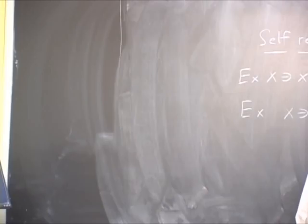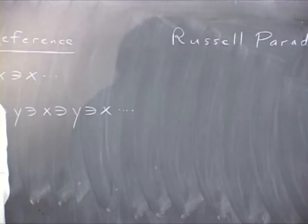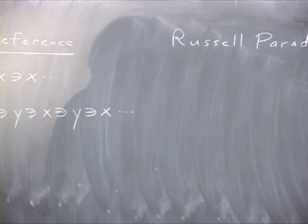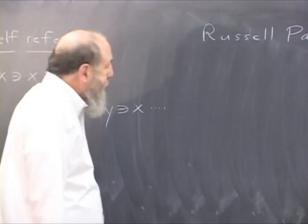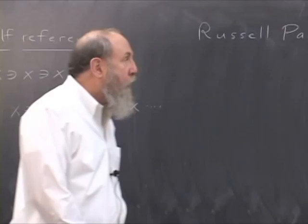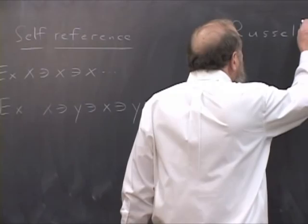Where did self-reference first come up in set theory? It came up in the formulation of the Russell Paradox. The Russell Paradox appeared just around the turn of the century, the end of the 19th century, in a letter that Russell wrote to Frege, who was just about to come out with a massive book on the foundations of mathematics. This one-page letter demolished Frege's hopes of publishing that book. It also led to considerable rethinking of mathematics over a period of 20 or 30 years, until foundations of mathematics were thought to be well understood.